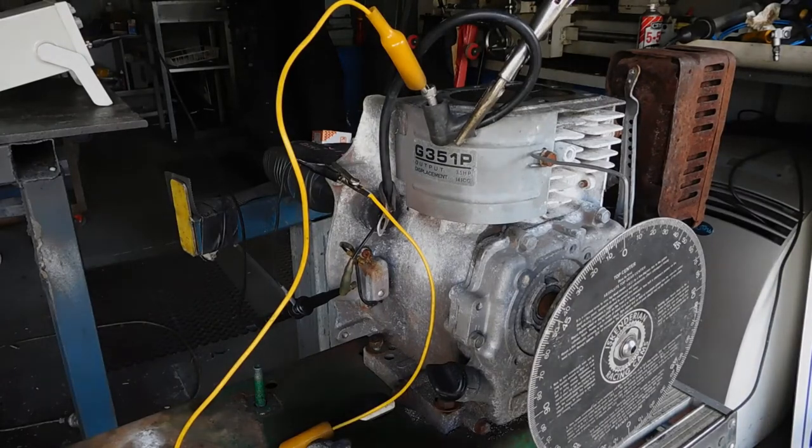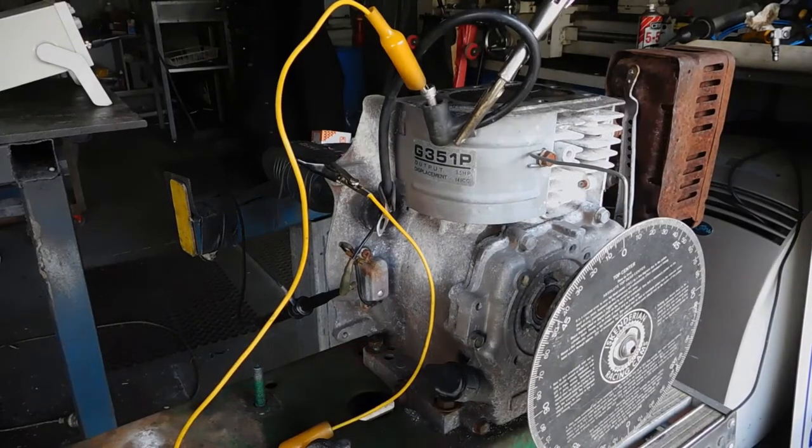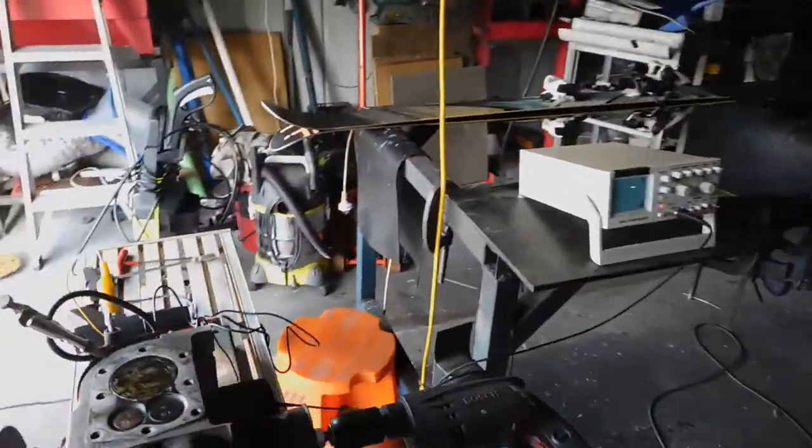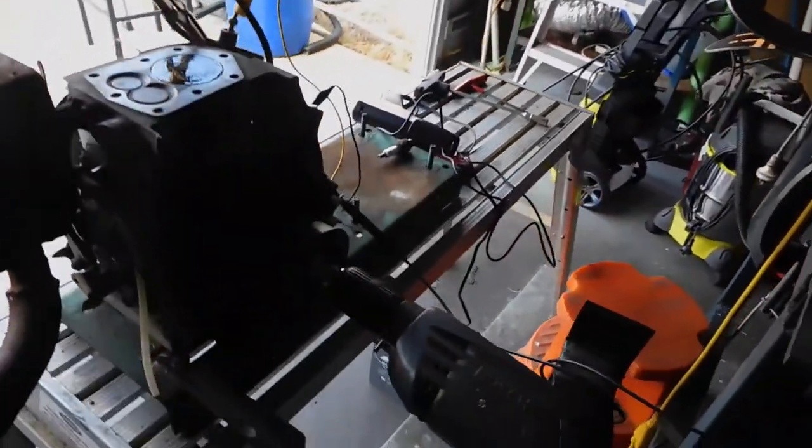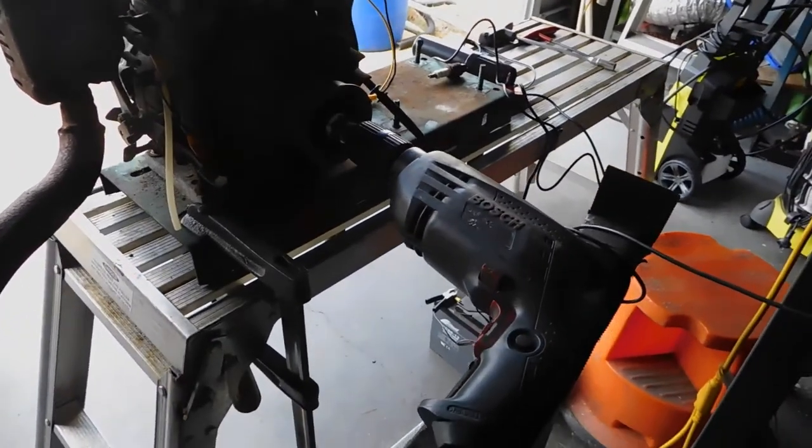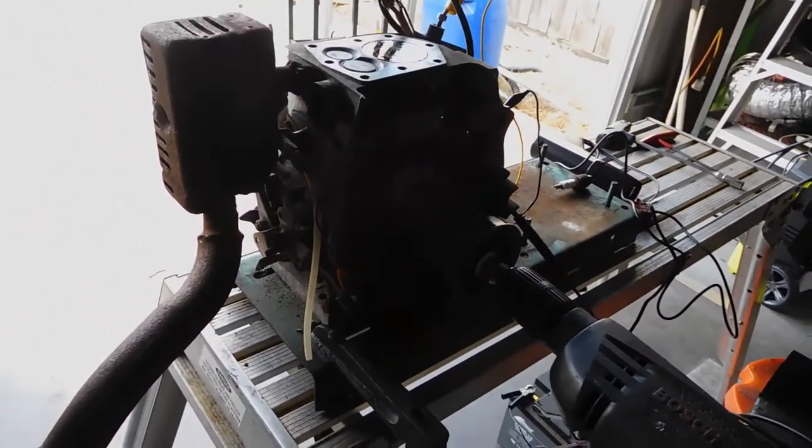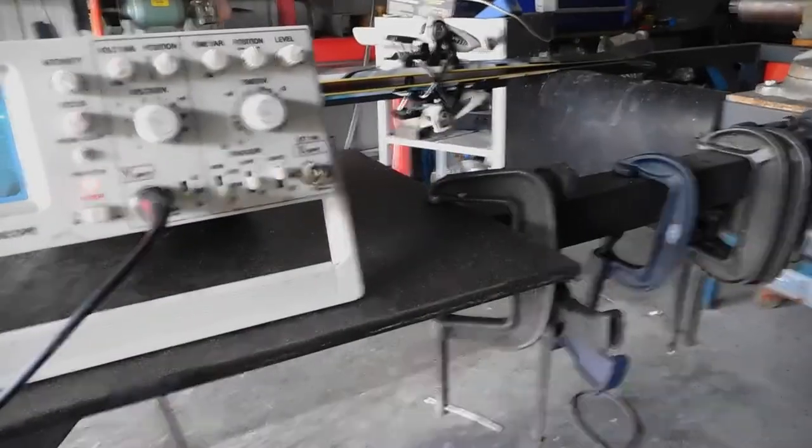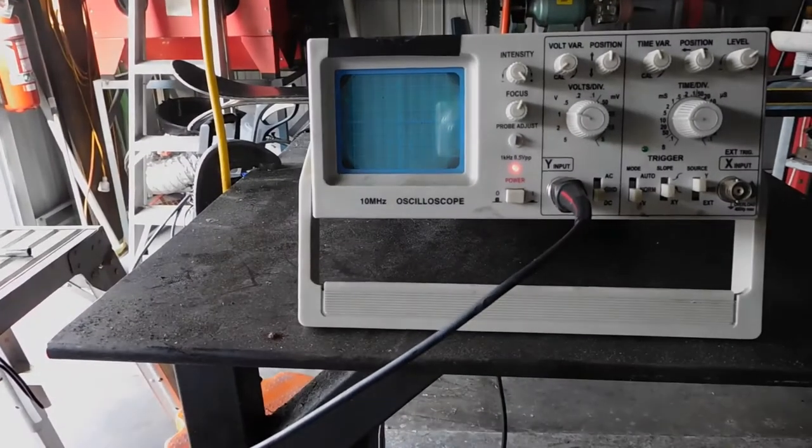So the first thing we're going to do is show you the primary signal of the ignition, similar to what I did in the last video, but this time we've got some drive on it and we're going to drive it at a constant speed so we get a more regular, readable pattern, and then we can work from there and get down to it.